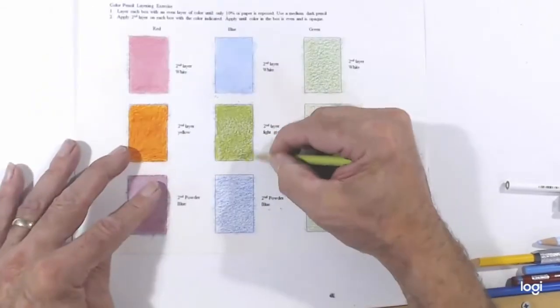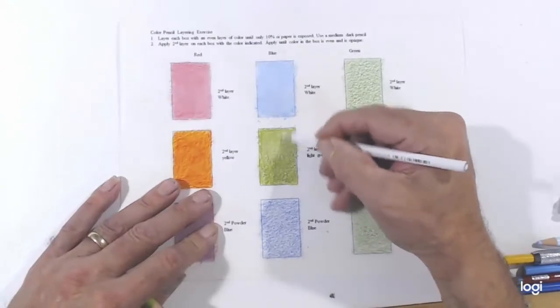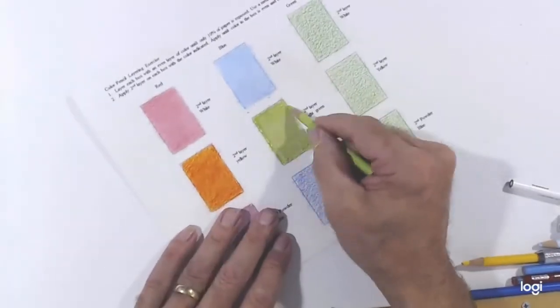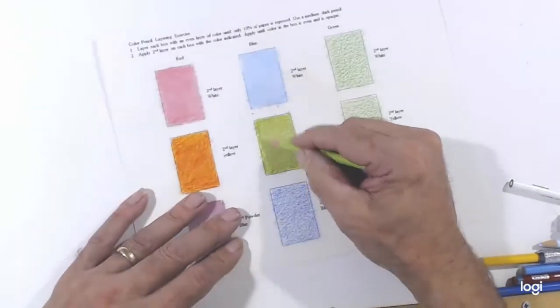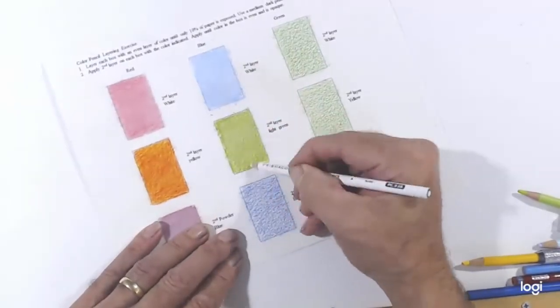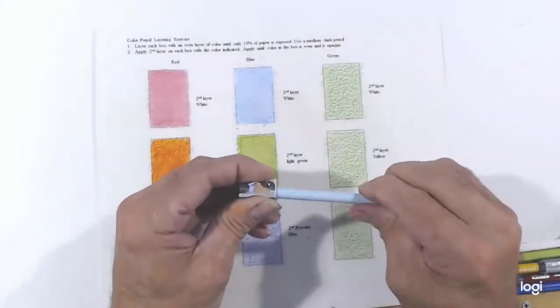Remember, when you are blending the second box in the blue and the second box in the green, choose a light color. So for the blue, I want to choose a light green, and for the green, I want to choose a lighter yellow, just so the color doesn't become too dark.